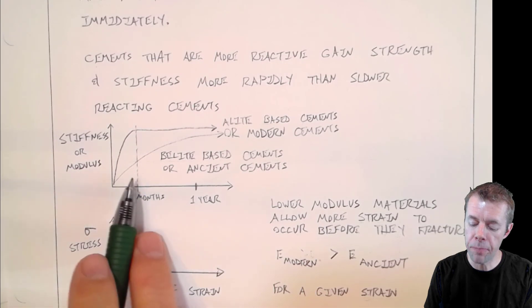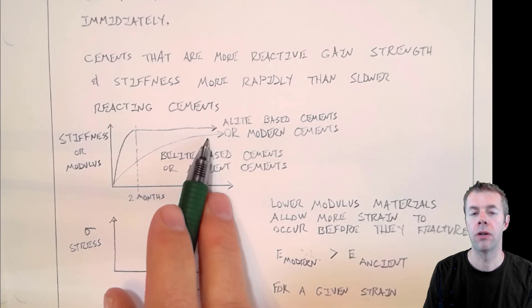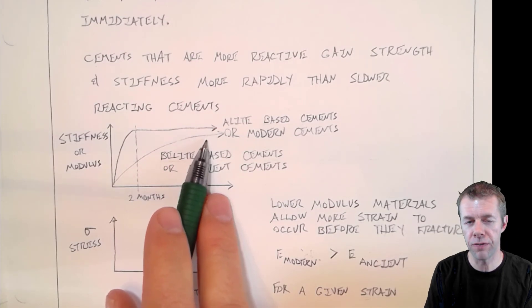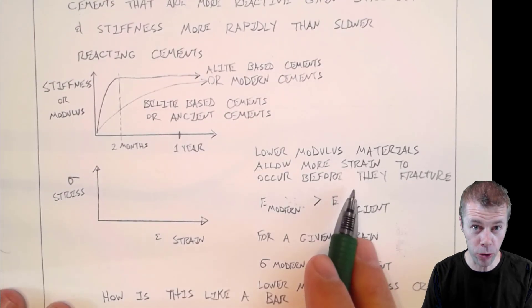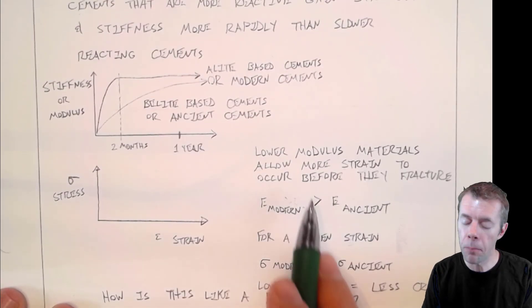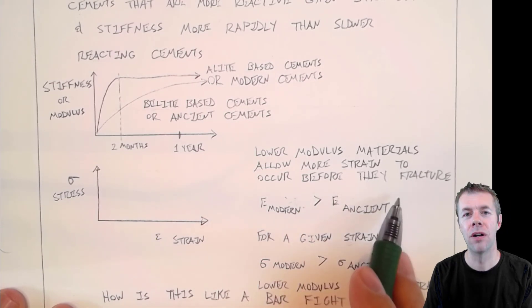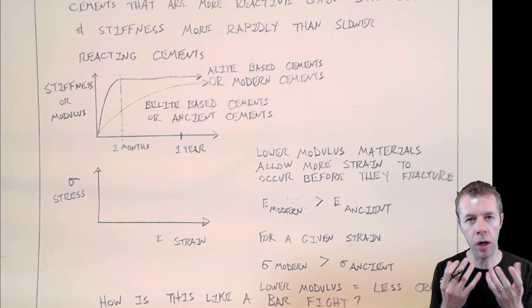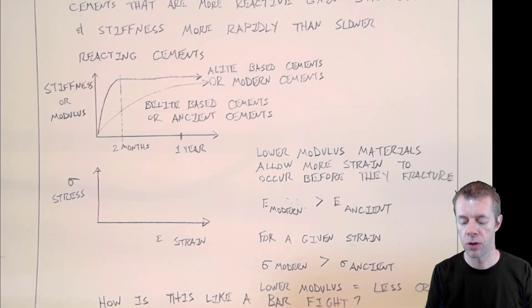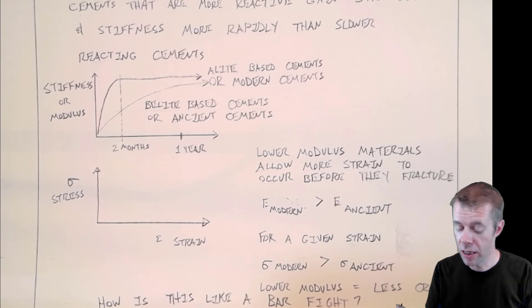They're A-light-based. That's our modern cements. They gain strength very, very, very quickly. Days. They gain stiffness. I show here, after two months, I say that they're pretty much done gaining stiffness, and they're flat. But if we look at B-light-based cements, these are the ancient cements. It took them a year or so to gain stiffness. Lower modulus materials, things that are more squishy, they allow more strain to occur before they tear or fracture. They allow more deformation, things that happen with a lower modulus, before they tear. So another way to show this mathematically, if you like math, I do, if you like math, is I'm showing stress here, and I'm showing strain down here.